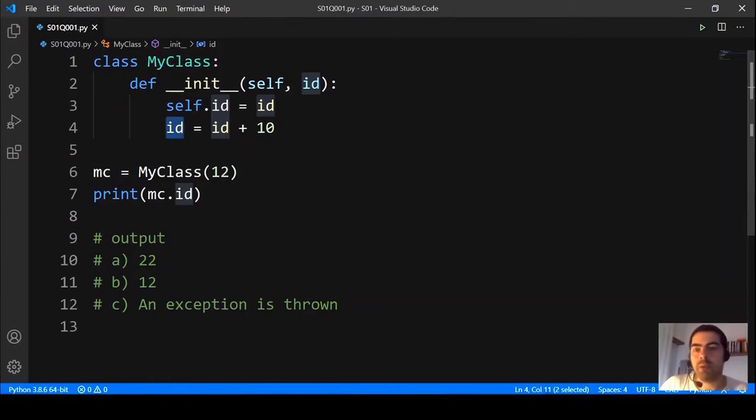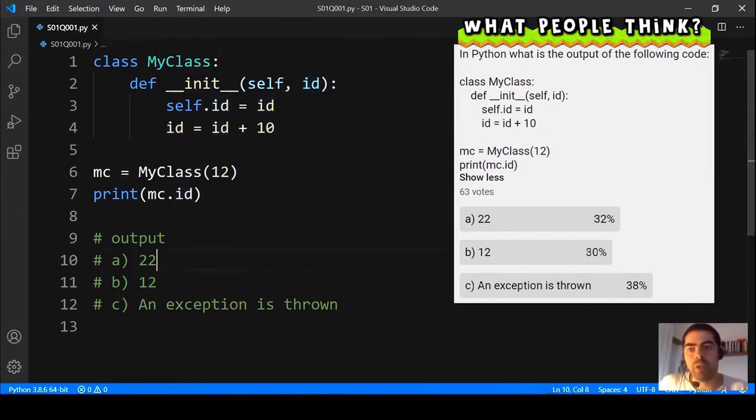So, what would be the output of this? The first option is 22, the second option is 12, and the third option is an exception is thrown.